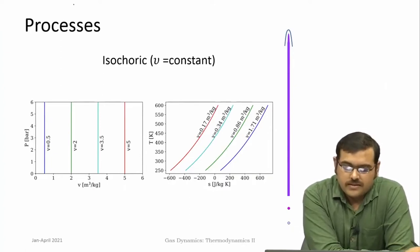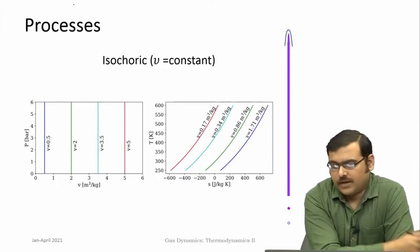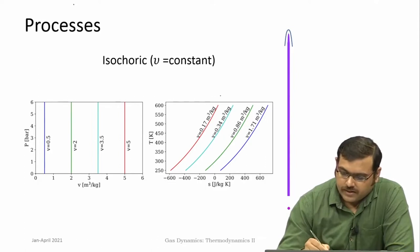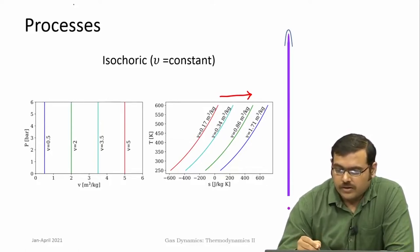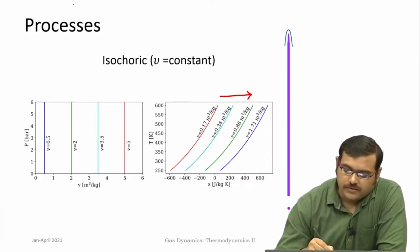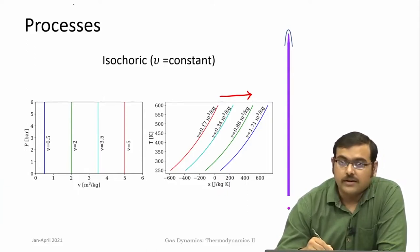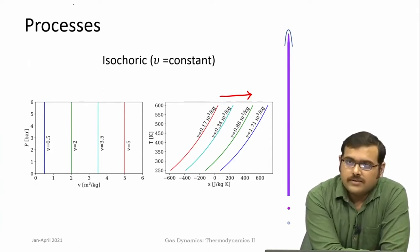Isochoric processes, where specific volume or density is held constant, are vertical lines in a PV diagram and curves in a TS diagram. As entropy increases (left to right in the TS diagram), specific volume increases, meaning density decreases. Combining both: for isobaric curves pressure decreases with increasing entropy, while for isochoric curves specific volume increases. The slope of the isochoric line in a TS diagram is higher than the isobaric line — this should be kept in mind when understanding these representations.